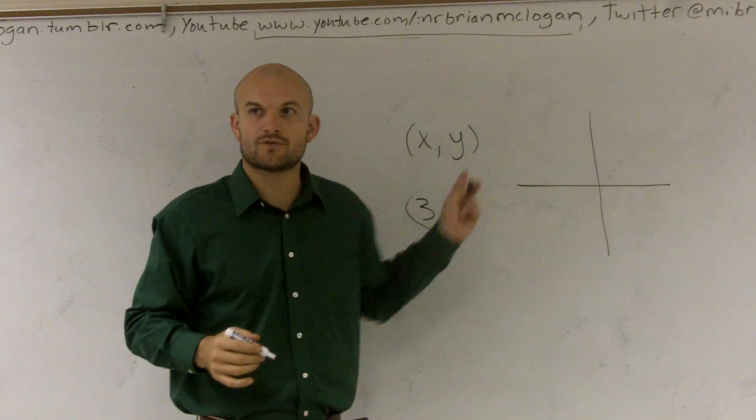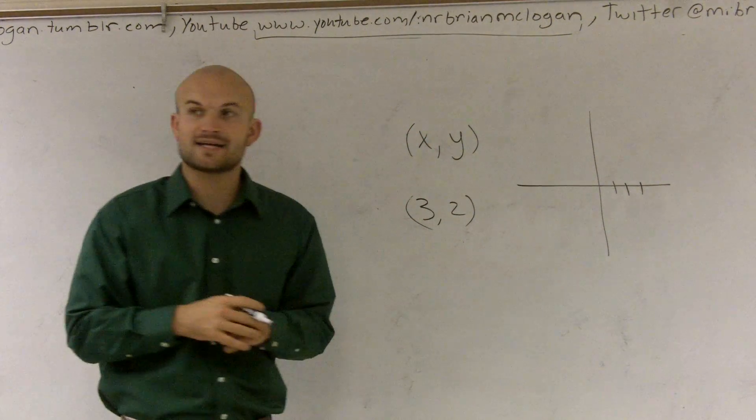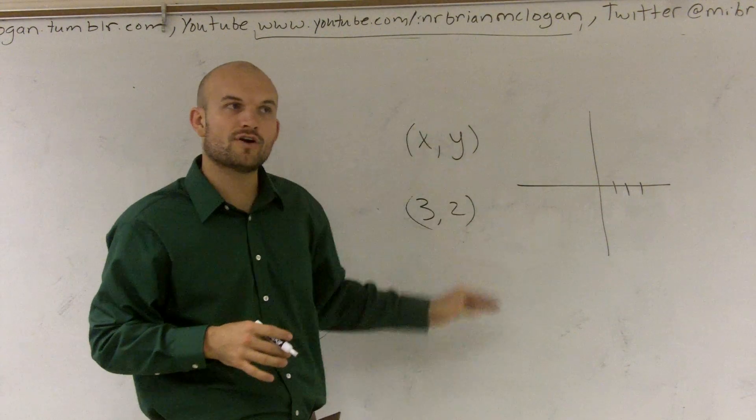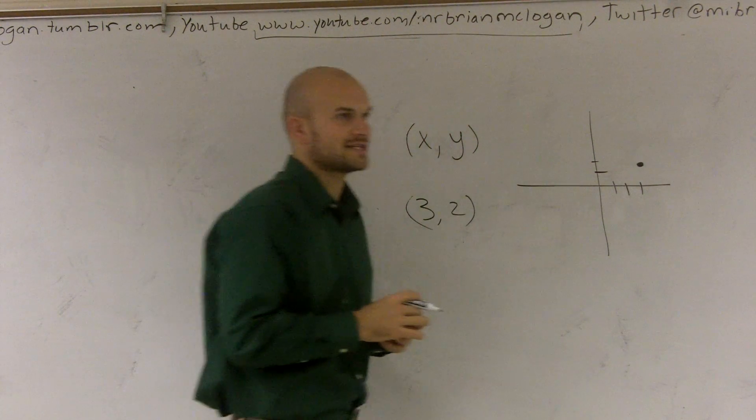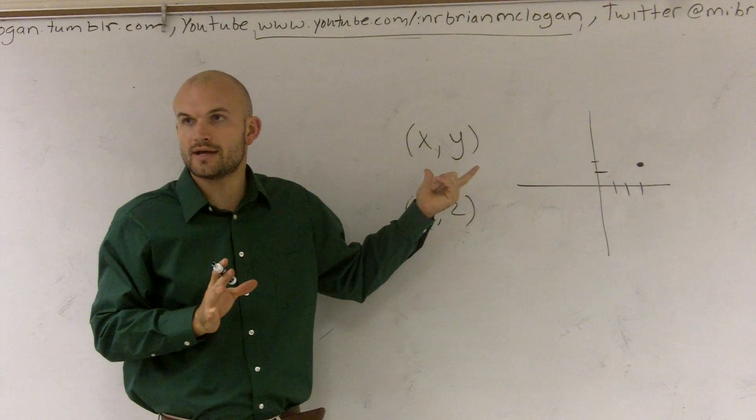x told us how far to go left or right, which here would be three points over to the right on the x axis. And then 2 told us how far to go vertically, which would have been up 2 on the horizontal axis or the y-axis.